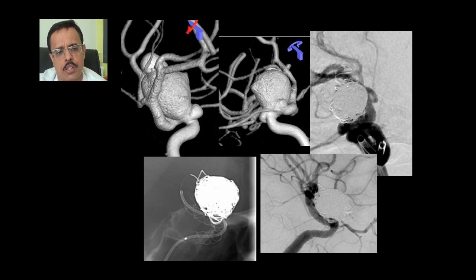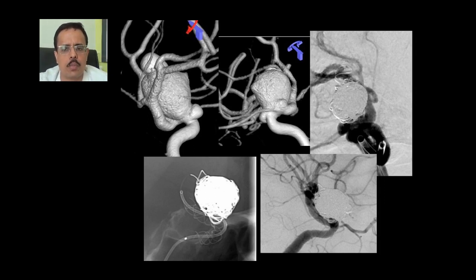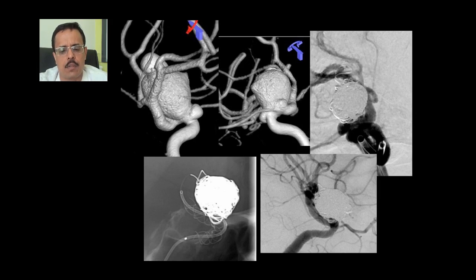Another patient with a giant, complicated, multi-lobulated aneurysm presented with bleeding. In the acute stage, we coiled the aneurysm, and at a later stage we placed a flow diverter stent. The follow-up showed complete reconstruction of the residual aneurysm — it looks like a normal artery now.